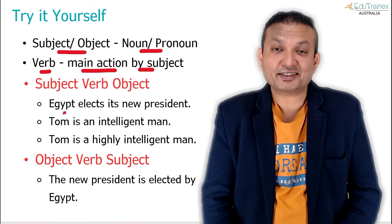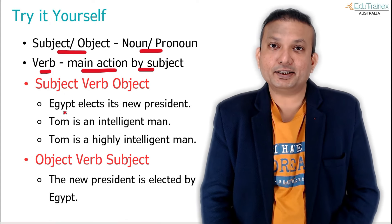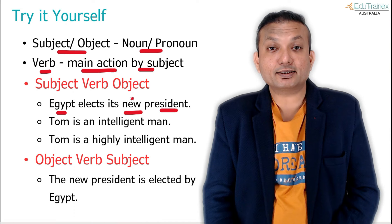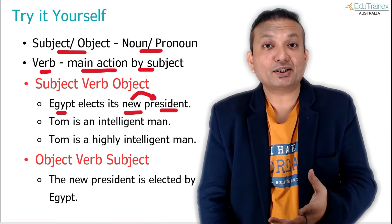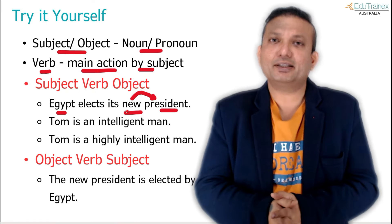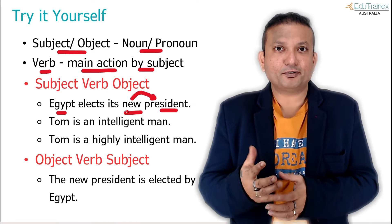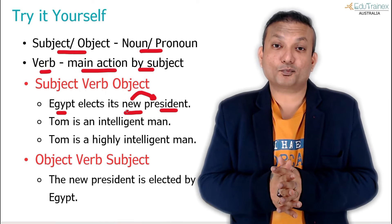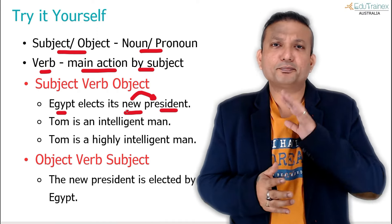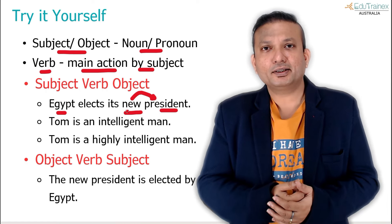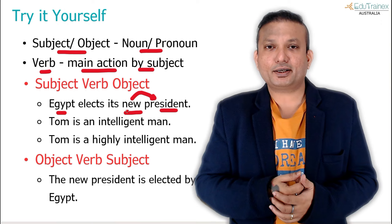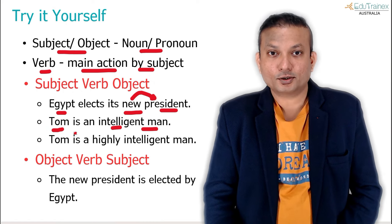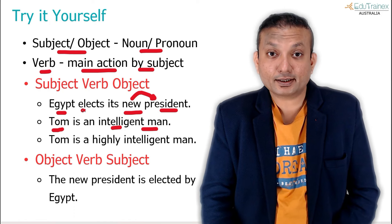Applying the skills to actual exam questions: 'Egypt elects its new president.' 'New' is describing the object — object is always a noun — so something that describes a noun is an adjective. This pattern repeats in more than 70% of the overall blanks in the PTE exam. That's the way of English — if you're describing someone, you put an adjective before them. 'Tom is an intelligent man' — same pattern. With 'elects' I can also add an adverb: 'Egypt slowly elects its new president.'